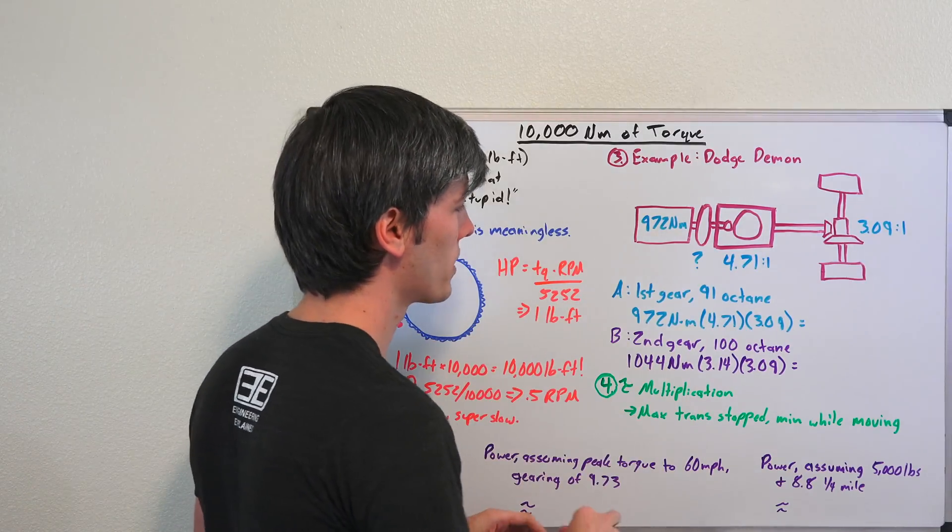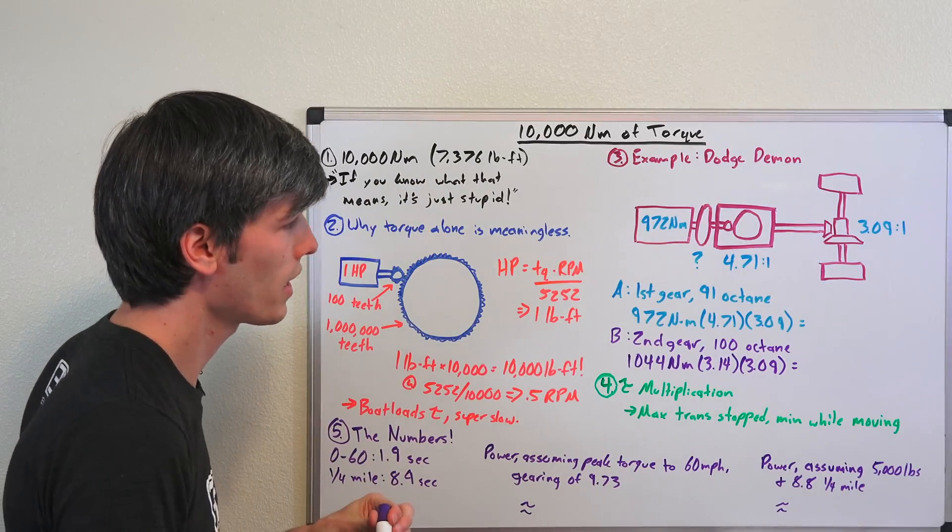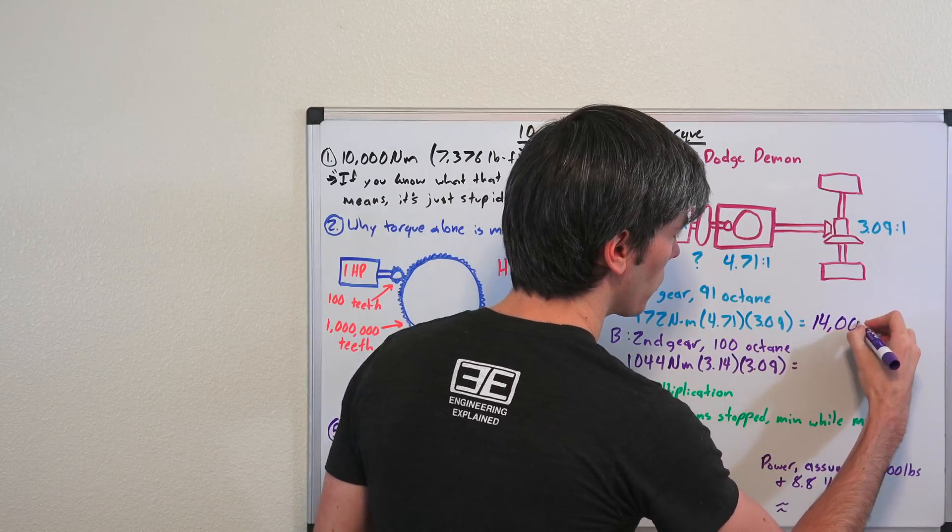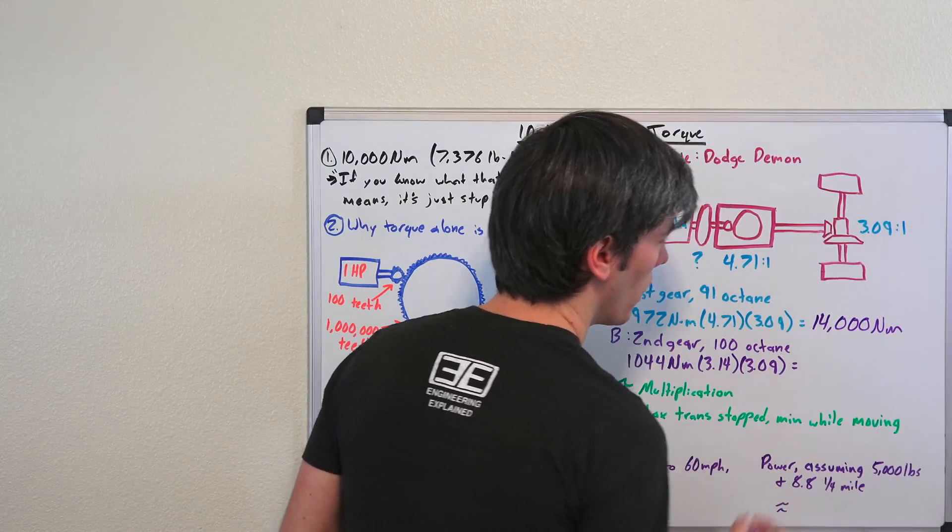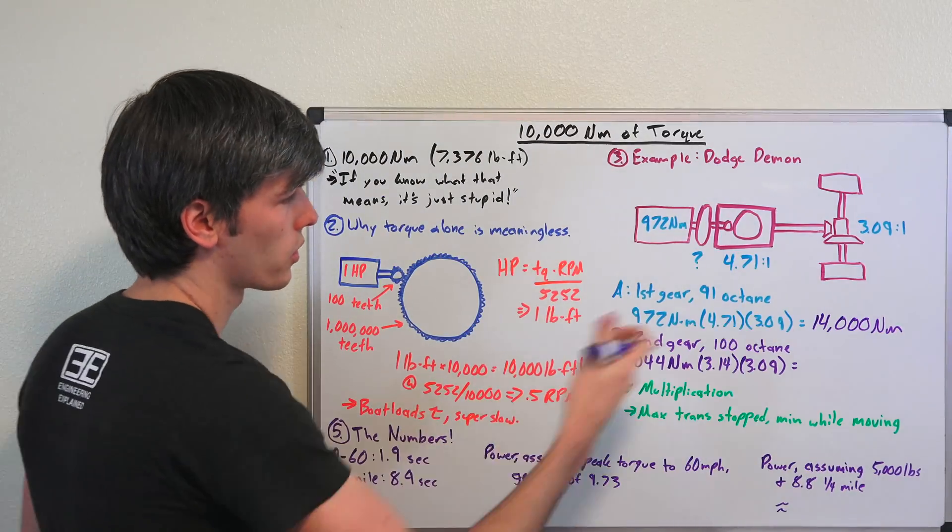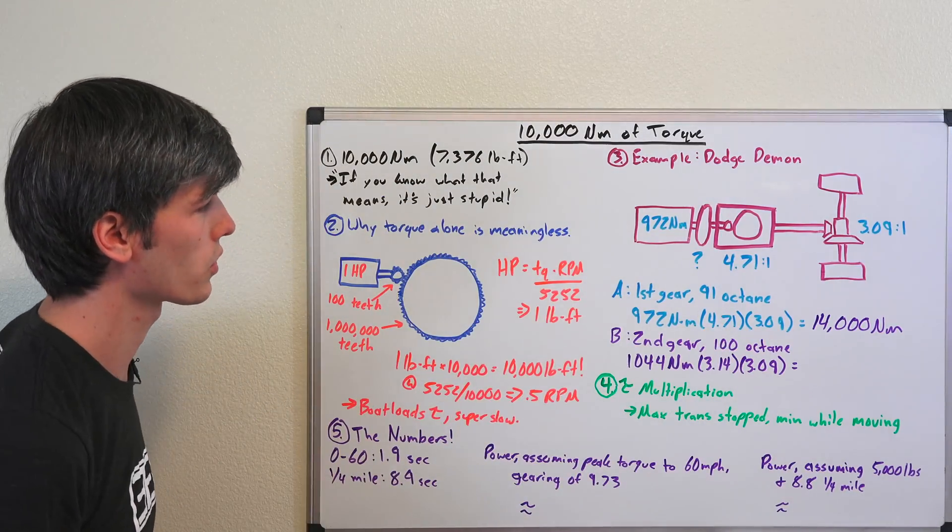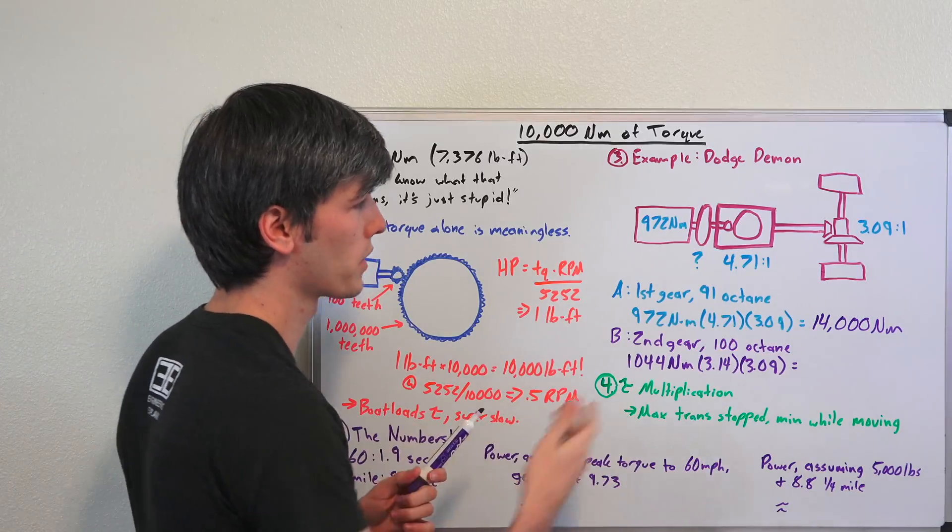972 times 4.71 times 3.09, and that will give us about 14,000 newton-meters of torque at the wheels. That's the wheel torque, so as you can see certainly higher than the Tesla Roadster's claim. The wheel torque being 14,000 in first gear and that's with no torque multiplication from the torque converter.